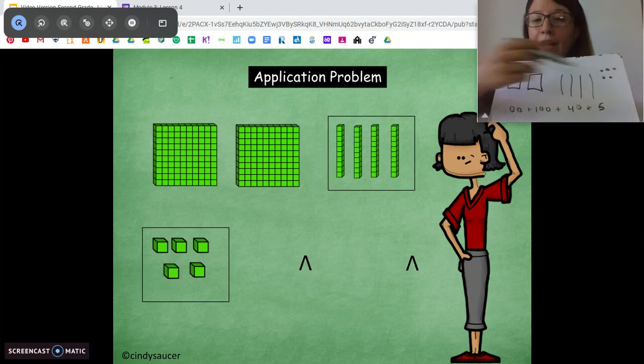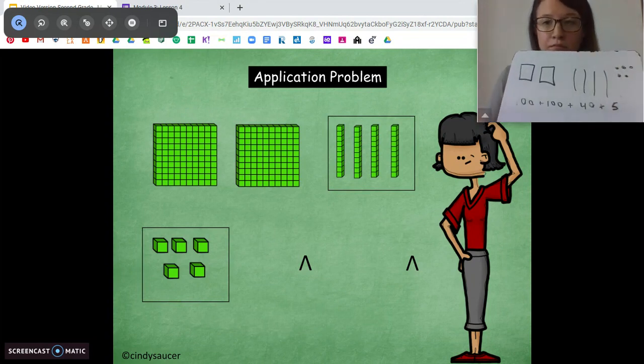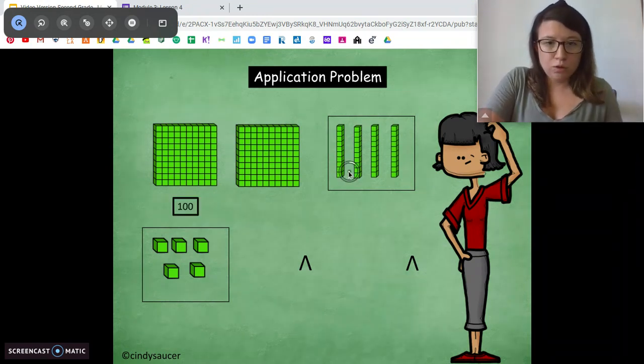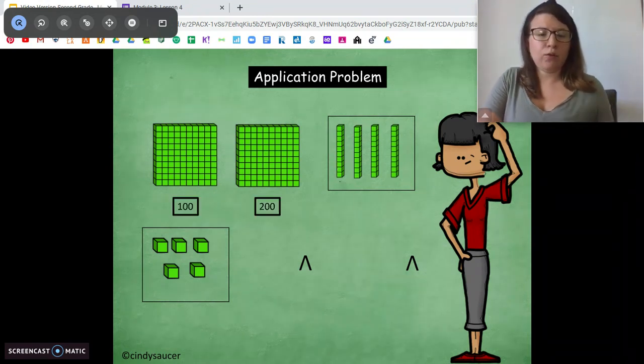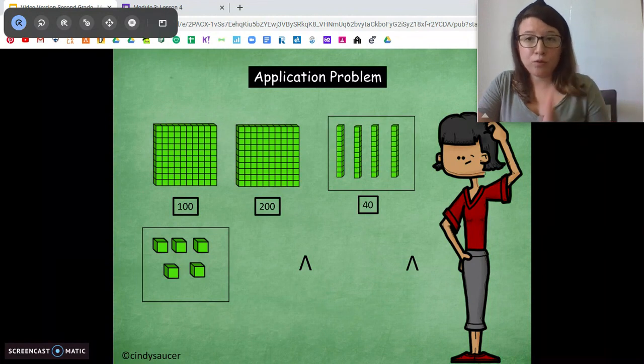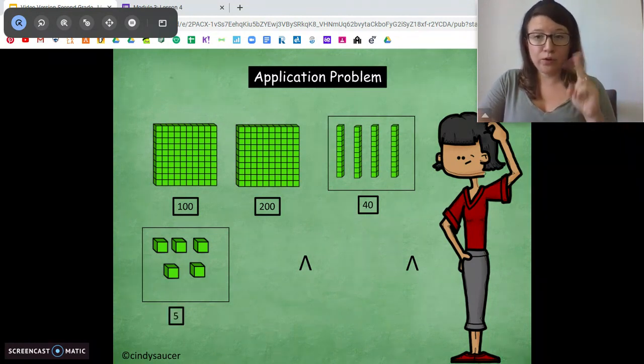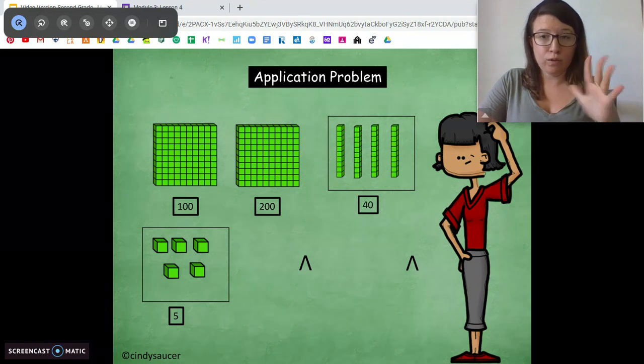Ready? Okay. So we can kind of count our base 10 objects here. We can go 100, 200, 210, 220, 230, 240. 240, 241, 242, 243, 244, 245.